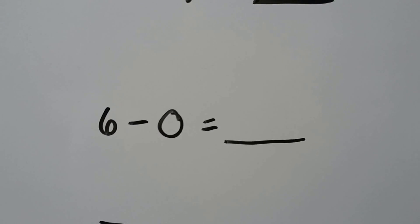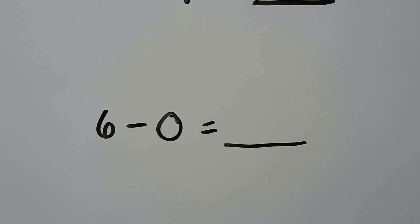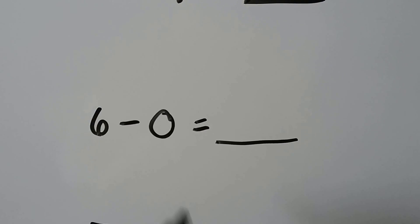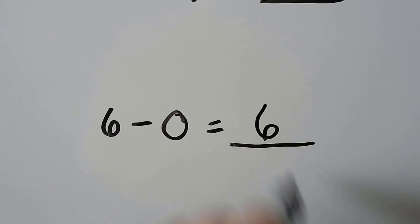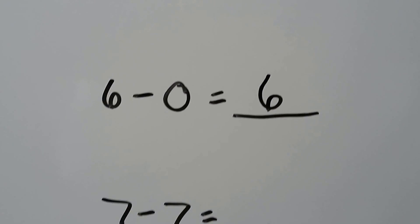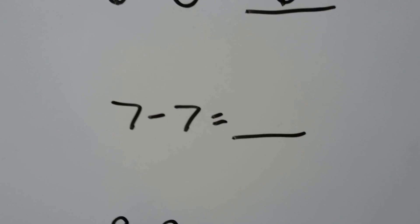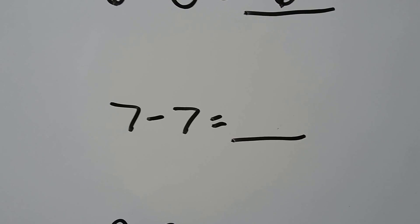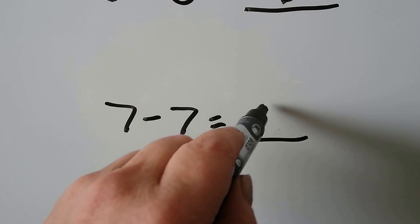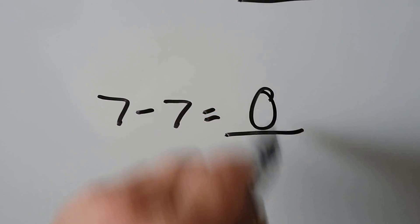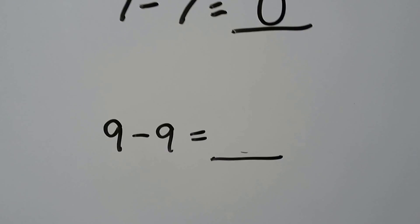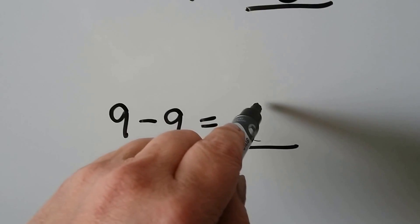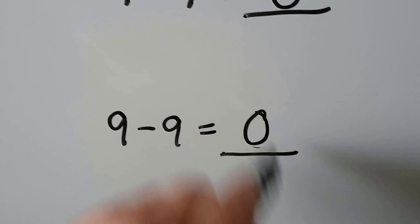Six minus zero — when we subtract zero, the number stays the same, it stays six. Seven minus seven — when we subtract all, zero are left. Nine minus nine — when we subtract all, zero are left.